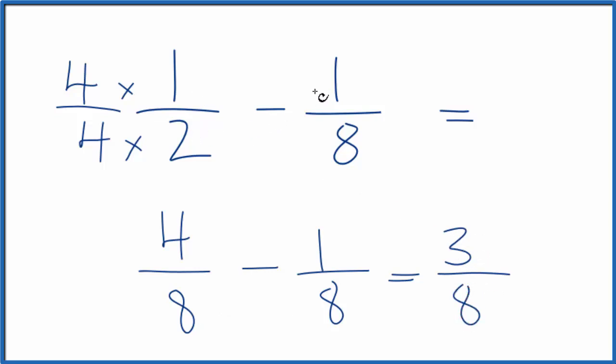So one-half minus one-eighth, that's three-eighths. And we really didn't change the one-half. One-half is zero-point-five. One divided by two is zero-point-five. Four divided by eight, that's also zero-point-five. The thing is, we got this to have a denominator that was in common with the one-eighth, so we could subtract one-half minus one-eighth.